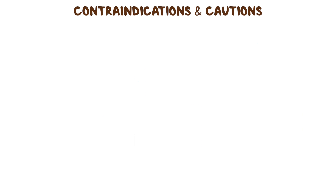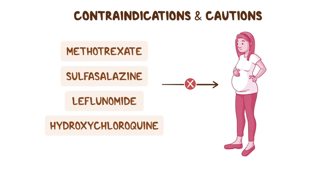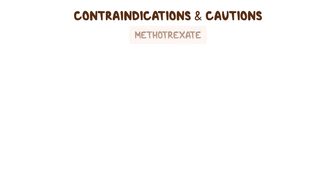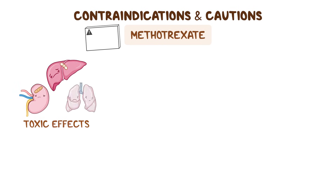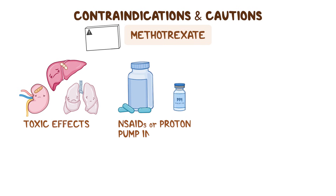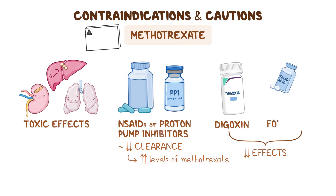As far as contraindications go, these medications should not be used during pregnancy. Methotrexate has some important boxed warnings, including its toxic effects on the liver, kidneys, and lungs. On top of that, methotrexate should not be combined with NSAIDs or proton pump inhibitors, since these medications can decrease the clearance of methotrexate from the body, potentially leading to elevated methotrexate levels. Lastly, methotrexate can decrease the effects of digoxin and folic acid.